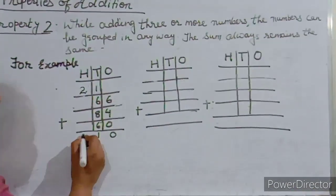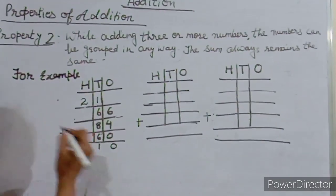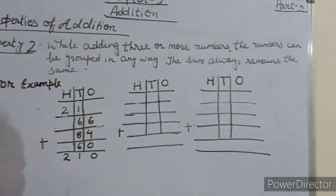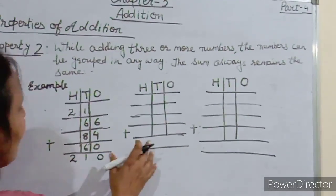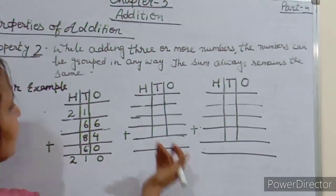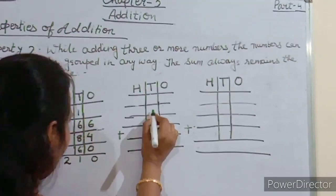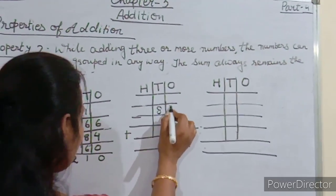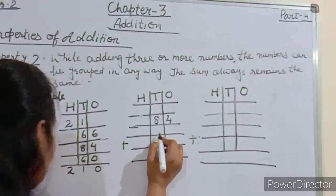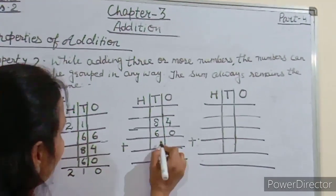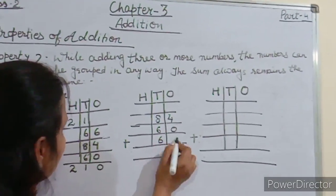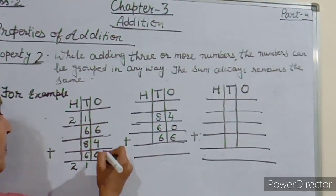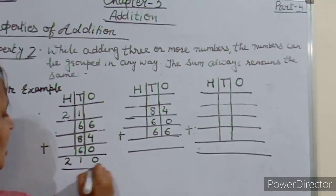We write 2 under the hundreds column. Now I am regrouping these numbers another way. Here I am writing 84 plus 60 plus 66. The answer is 210.